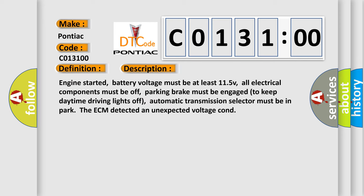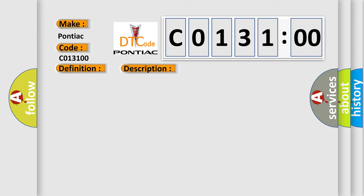Engine started, battery voltage must be at least 11.5V, all electrical components must be off, parking brake must be engaged to keep daytime driving lights off, automatic transmission selector must be in park. The ECM detected an unexpected voltage condition. This diagnostic error occurs most often in these cases.